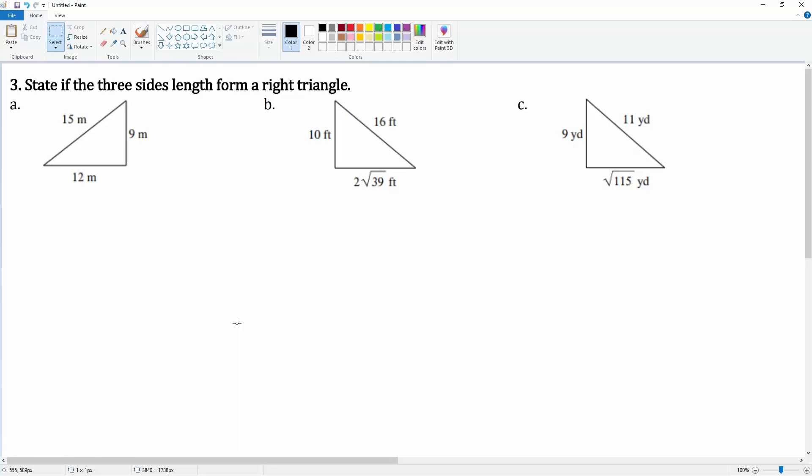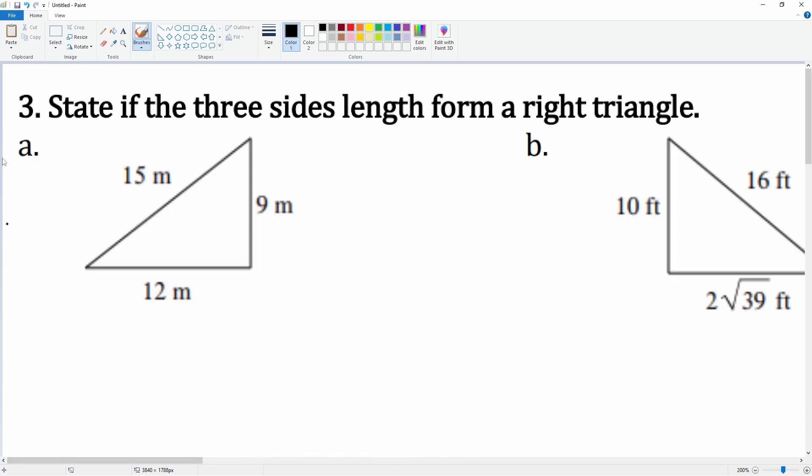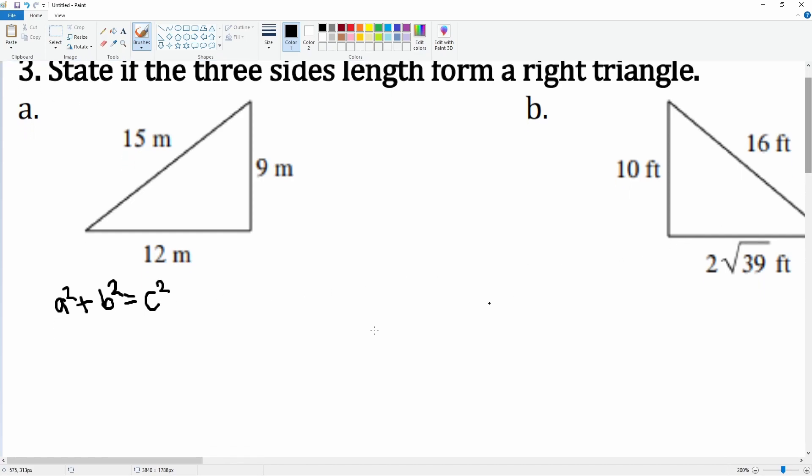Number three, you're going to state if the three sides of the length here form a right triangle. For it to form a right triangle, what has to be true is that a squared, which is a leg squared, plus b squared, which is the other leg, has to equal c squared, which is the hypotenuse. This equation has to be true for it to be a right triangle.